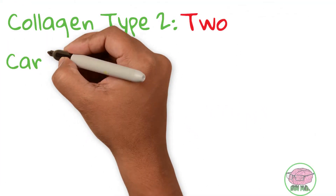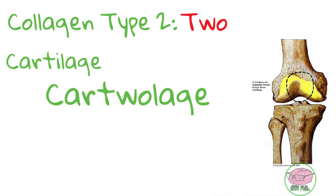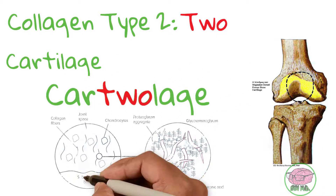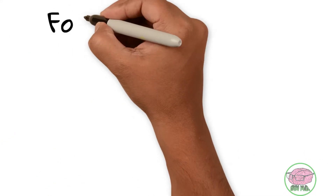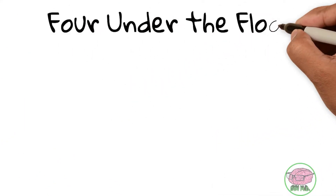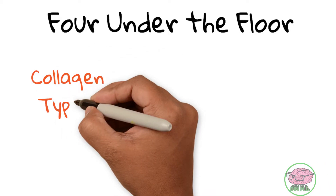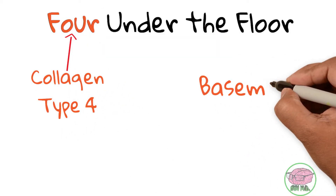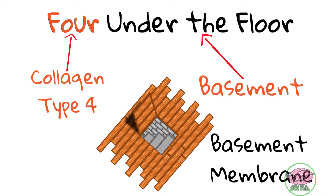Collagen type 2 creates cartilage. How do you remember? You can pronounce it "cartilage" and write it with a T-W-O. Collagen type 2 creates cartilage. Collagen type 4 — you can use the rhyme "four under the floor," with "four" meaning collagen type 4 and "under the floor" meaning the basement membrane that forms the inferior part of every epithelia, which is made up of mostly collagen type 4.